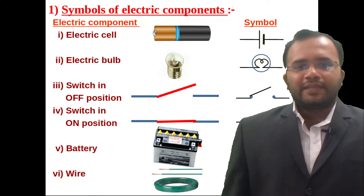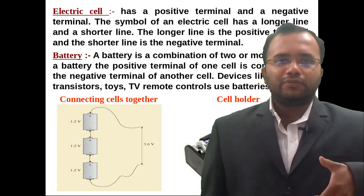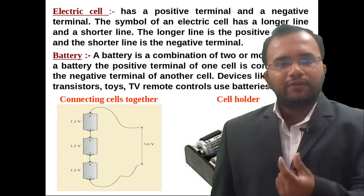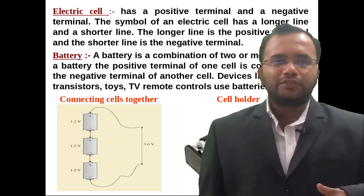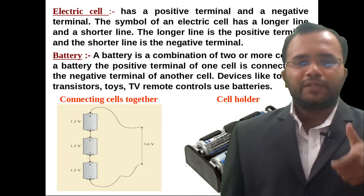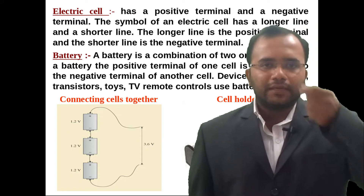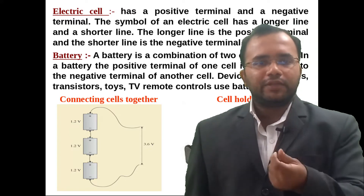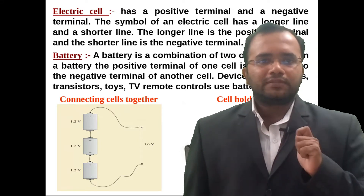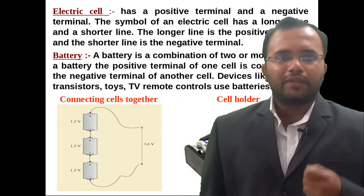What is an electric cell? An electric cell has a positive and a negative terminal. The positive terminal is represented by a big line and the negative terminal is represented by a small line.